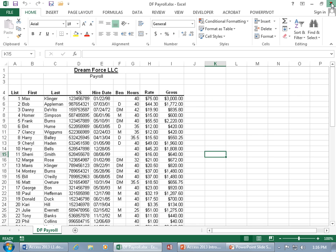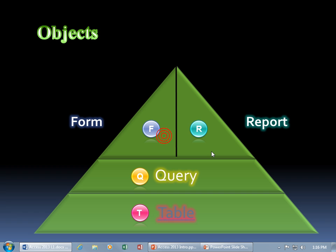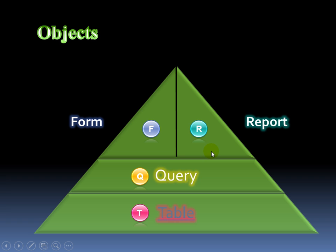So having said that, let me close out of Excel — I'm not going to save it — and go back to our presentation and finish our objects. So once we have our raw organized data in the tables, we can go ahead and query out the information from those tables. We can say we want to see all the employees who don't have any benefits. That's what's called a query — it instantly filters out employees who have benefits and only pulls in those who don't, without having to scroll through hundreds of thousands of records.